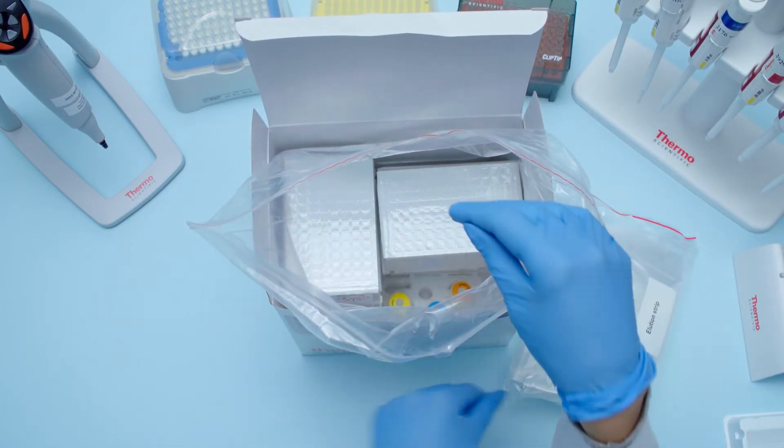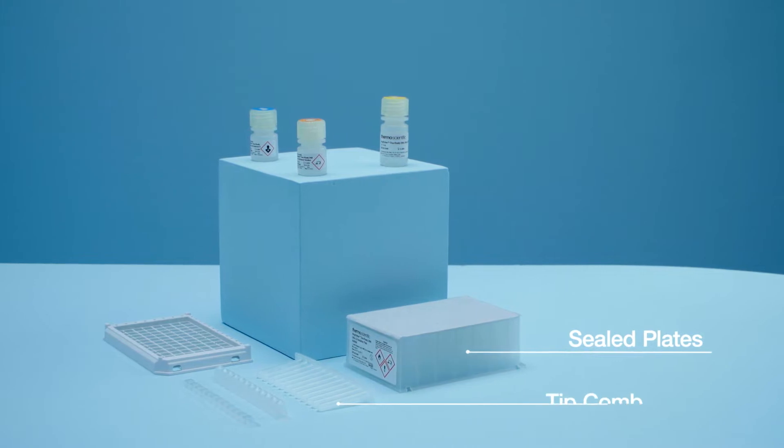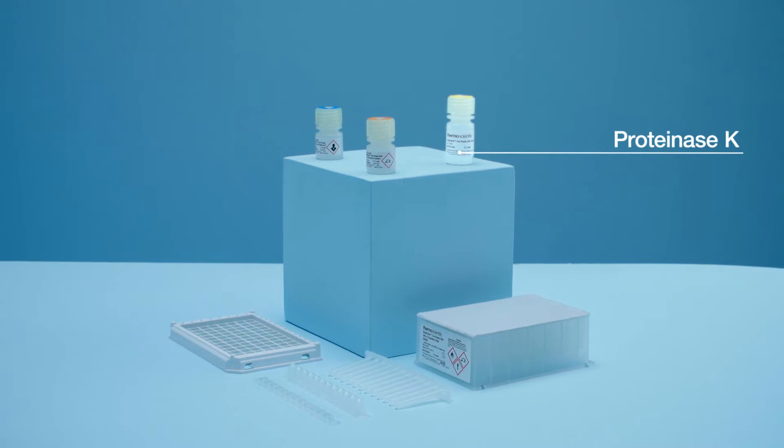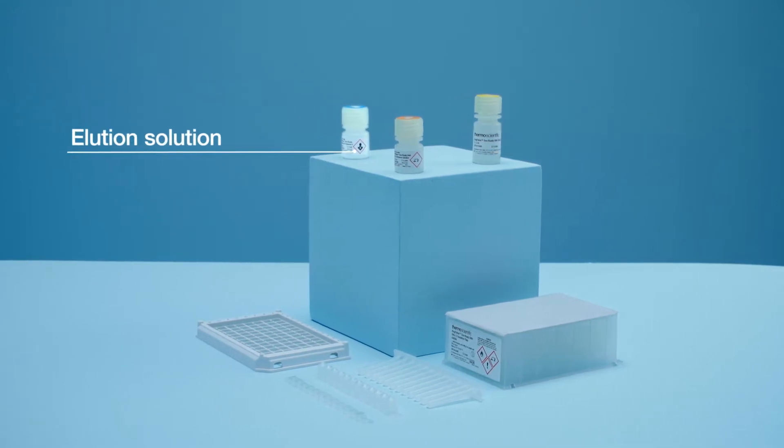The kit comes with 8 sealed plates, 8 tip combs, 8 elution strips and caps, a bottle of Enhancer, a bottle of Proteinase K, and a bottle of elution solution.